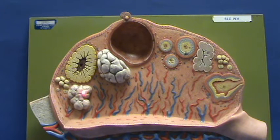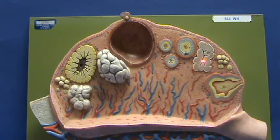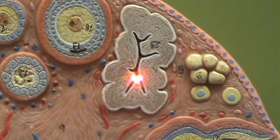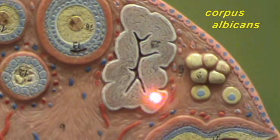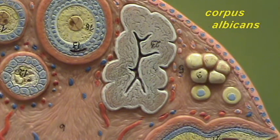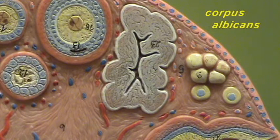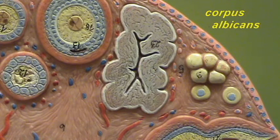Here are two corpora albicantes shown in three-dimensional relief, and another corpus albicans shown in two dimensions. Looking more closely at the corpus albicans in a two-dimensional slice, this is scar tissue that fills in the space remaining after the cells of the corpus luteum degenerate and are slowly replaced by connective tissue.